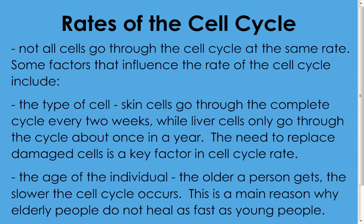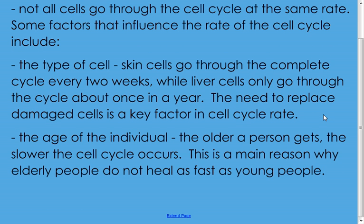What regulates how fast the cell cycle goes? For some cells this process may take only a few hours; for others a few days; for some it may take years; and some cells may not go through it at all. Not all cells go through the cycle at the same rate. The type of cell is one factor — skin cells go through this cycle every two weeks because they get rubbed off and need to be replaced. Liver cells, which are well protected inside the body, only go through the cycle about once every year.